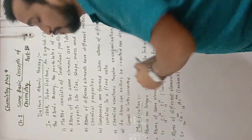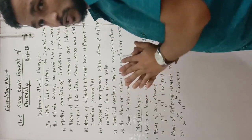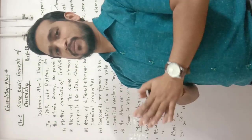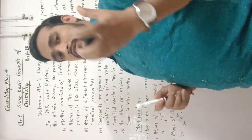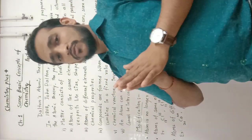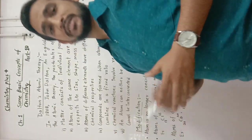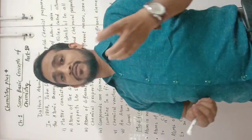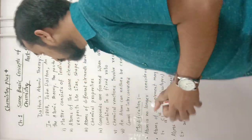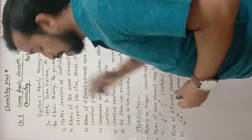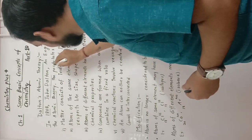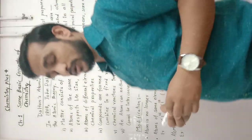We also studied this in class 9th. John Dalton was the first scientist who systematically approached the chemical combination of various elements. In his theory he discovered a few possibilities that established the relationship among various elements for combination and formation of compounds. In 1808, John Dalton, an English chemist, proposed the atomic theory.